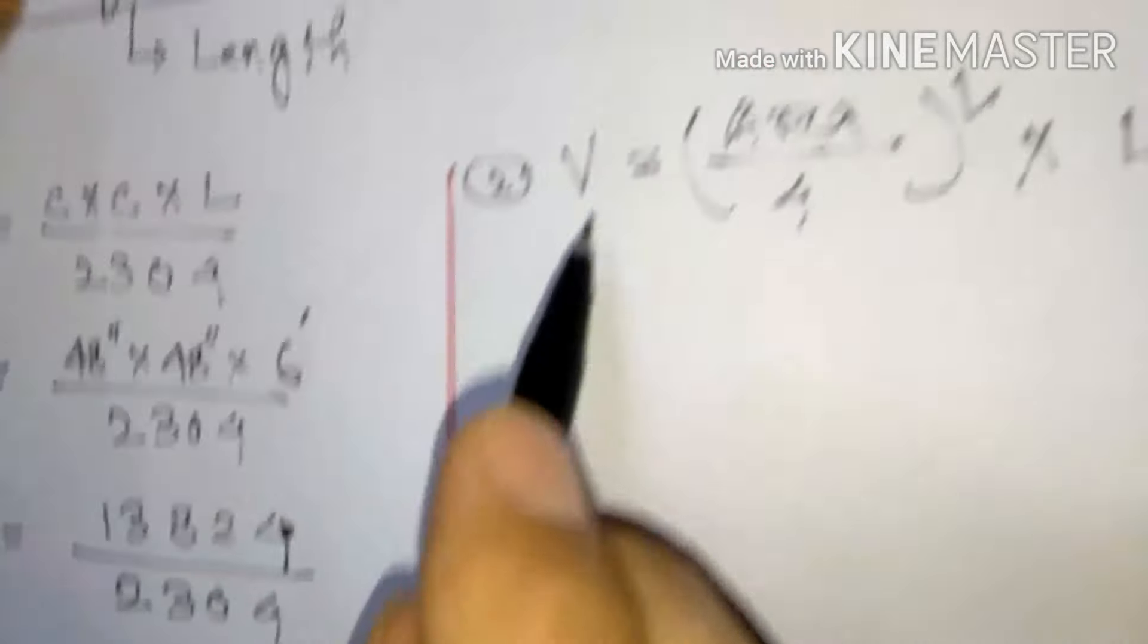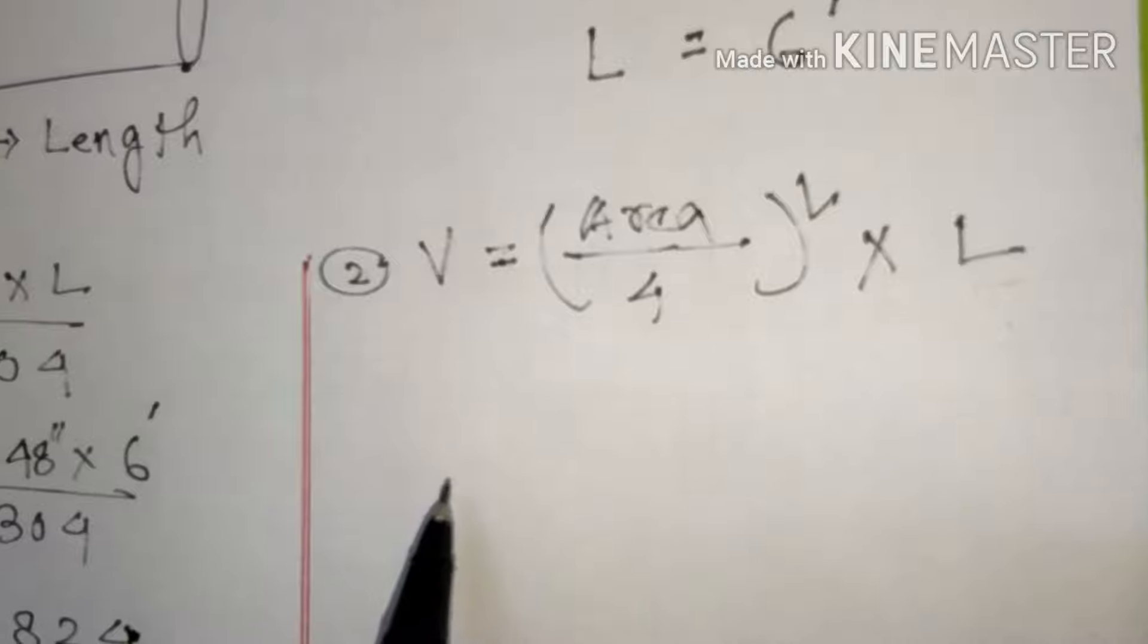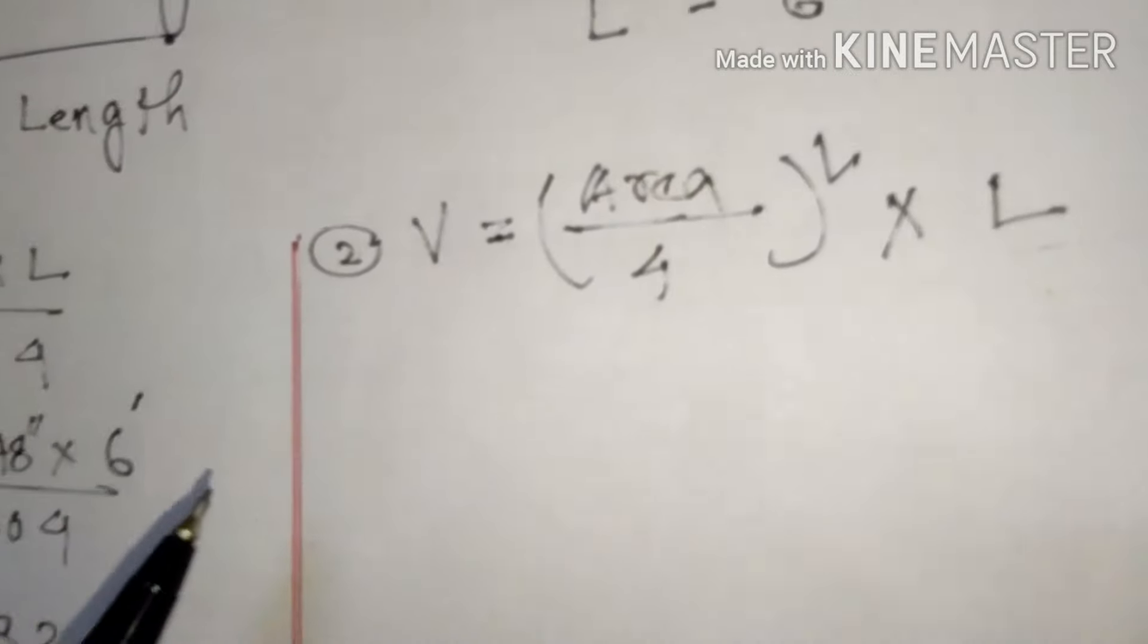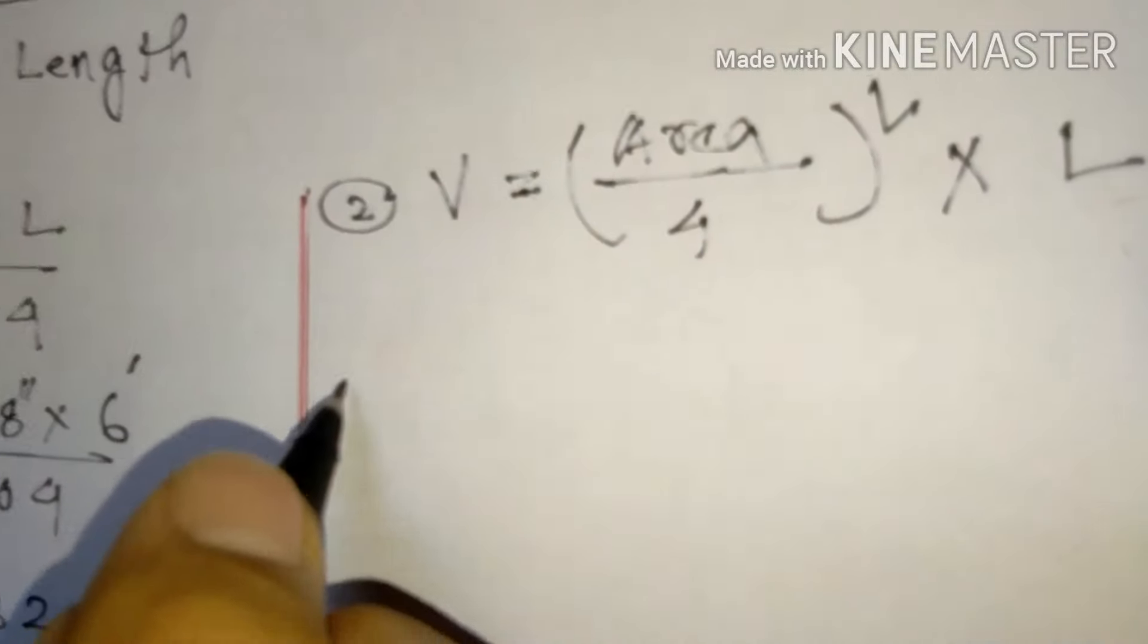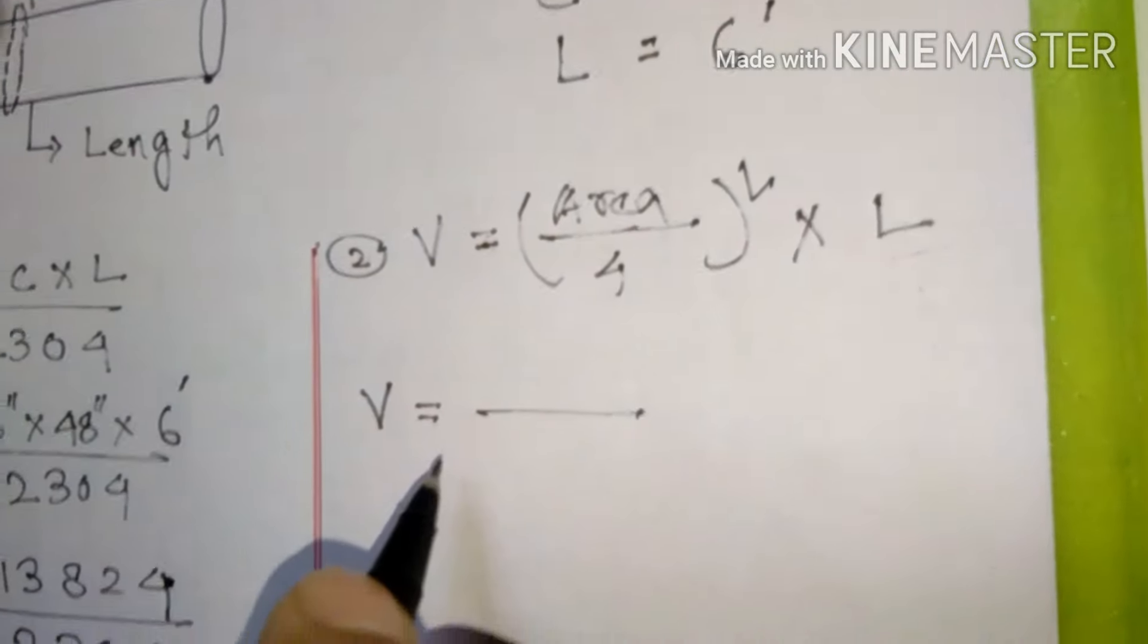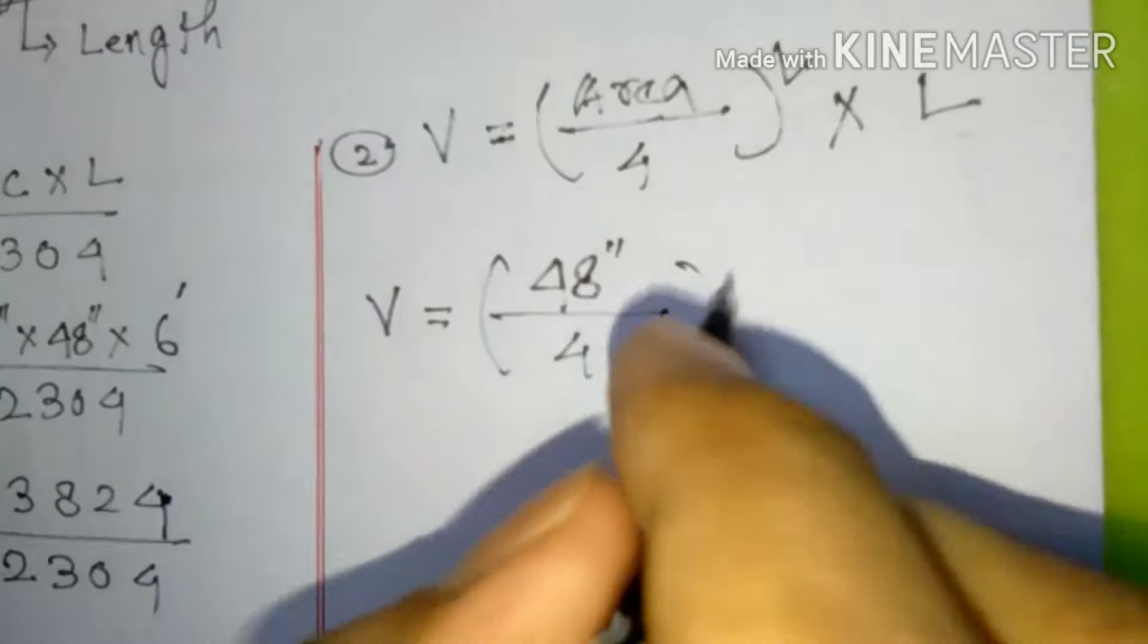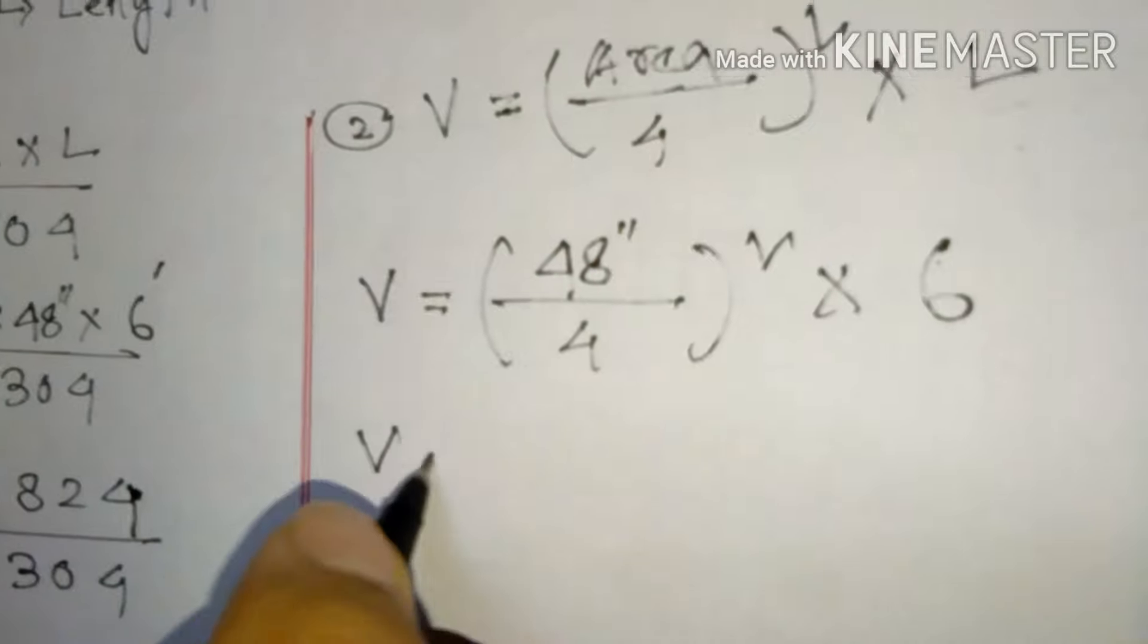Second one: Volume. What is the volume? How much volume occupied by this piece of wood we will find out. Volume equals area - the circumference, how much we are getting? 48 we are getting. Length how much we are getting? 6 feet we are getting.